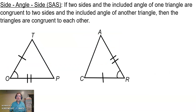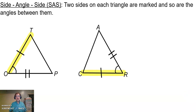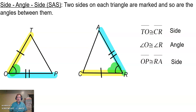The second way is Side-Angle-Side. SAS says if two sides and the included angle of one triangle are congruent to two sides and the included angle of another triangle, then the triangles are congruent to each other. We're looking for two sides being marked in each triangle and the angle between those two sides also needs to be marked. TO is congruent to CR — there's a side. Angle O is congruent to angle R — there's the angle. And side OP is congruent to side RA. The angle is between the two sides; that's what we mean by included angle — two sides with the angle in the middle.